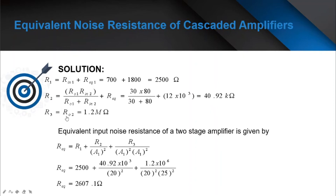For R3, which is equal to the output resistance of the second stage, R3 = 1.2 megaohms. Now that we have R1, R2, and R3, we can solve using the formula. Substituting: 2,500 + (40.92 × 10³)/20² + (1.2 × 10⁶)/(20² × 25²). The equivalent noise resistance comes out to 2,607.1 ohms.